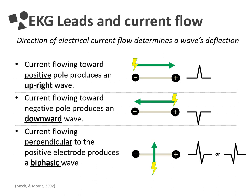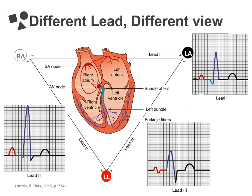If electricity is flowing toward the positive end of the lead, the wave will be upright. If electricity is flowing toward the negative end of the lead, the wave will be downward. And if electricity is flowing perpendicularly, the wave will be biphasic or have two points. This is not something you need to memorize — it's just here to help you understand why we need more than one lead. This slide is also trying to show you the different views given by each lead. We typically read a rhythm strip in lead two because the electrical flow in your heart goes from top to bottom toward the positive end of lead two, meaning lead two will give us the clearest picture with most waves upright.